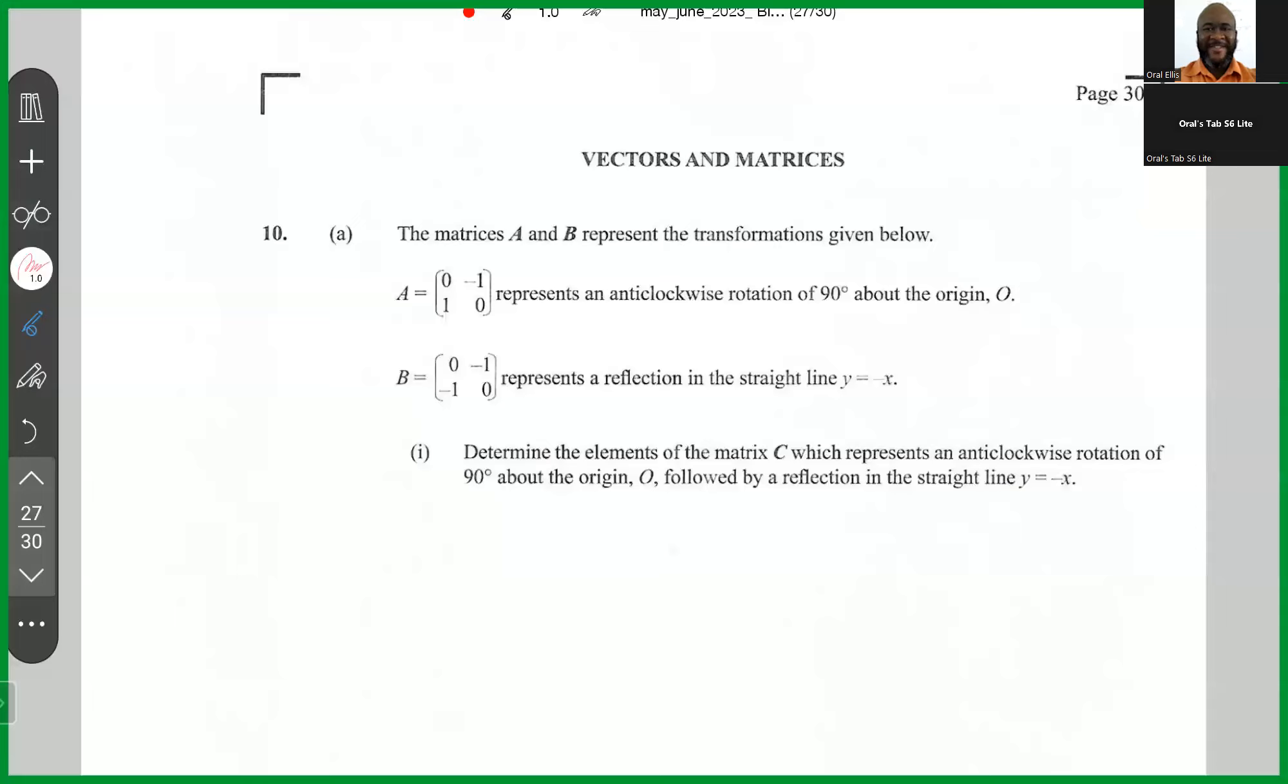Question number 10, part A says: matrices A and B represent the transformations given below. A equals 0, minus 1, 1, 0 represents an anticlockwise rotation of 90 degrees about the origin. B equals 0, minus 1, minus 1, 0 represents a reflection in the straight line y equals minus x. Determine the elements of the matrix C, which represents an anticlockwise rotation of 90 degrees about the origin, followed by a reflection in the line y equals minus x.